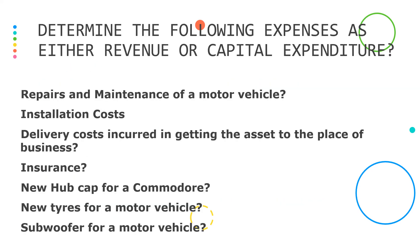Now we're going to have a little quiz to determine whether the following expenses are either revenue or capital expenditure. Write down whether each is revenue or capital: repairs and maintenance of a motor vehicle, installation costs, delivery costs incurred in getting the asset to the place of business, insurance, a new hubcap for a Commodore, new tires for a Commodore, or a new subwoofer for a motor vehicle.